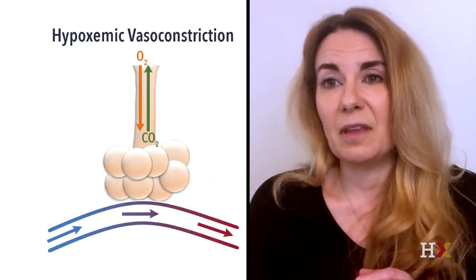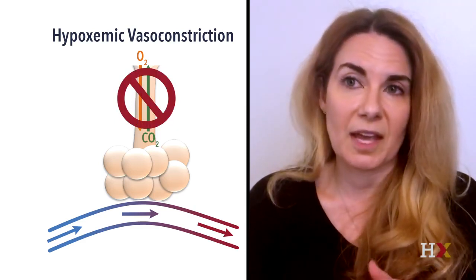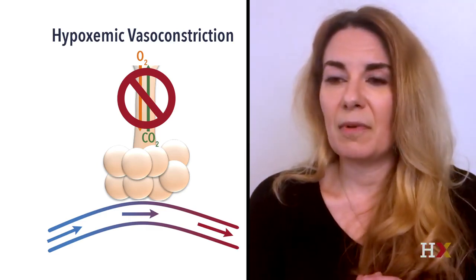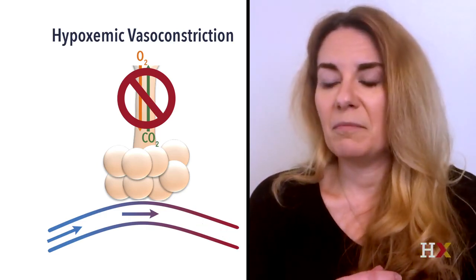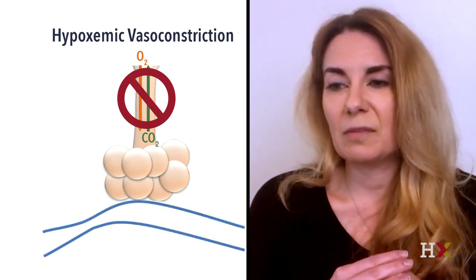Another key concept is hypoxemic vasoconstriction. When you have a lung unit that, for whatever reason, is not participating in adequate gas exchange, the body will try to correct for that by minimizing perfusion to that lung — constriction leading to decreased perfusion of these bad lung units. This happens all the time; we all have areas of ventilation-perfusion mismatch on a daily basis, which is normal. Our body uses compensatory mechanisms to optimize ventilation-perfusion matching, but when a patient gets critically ill, sometimes those mechanisms are overwhelmed and it doesn't work.